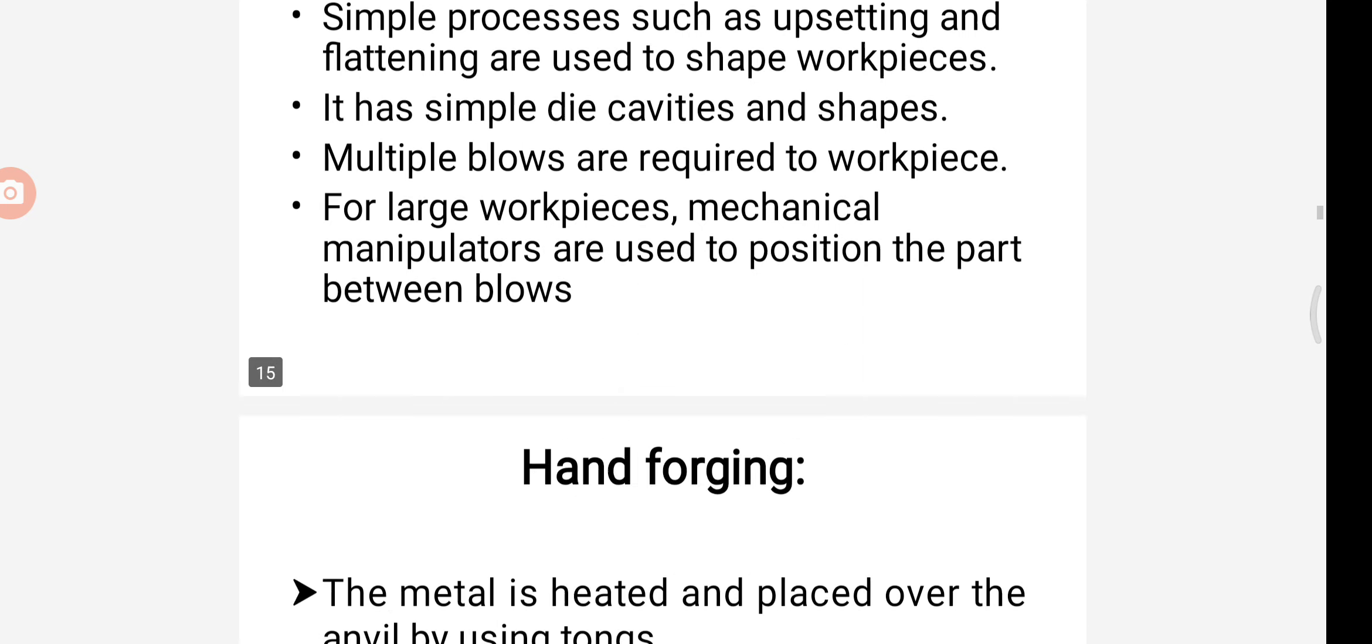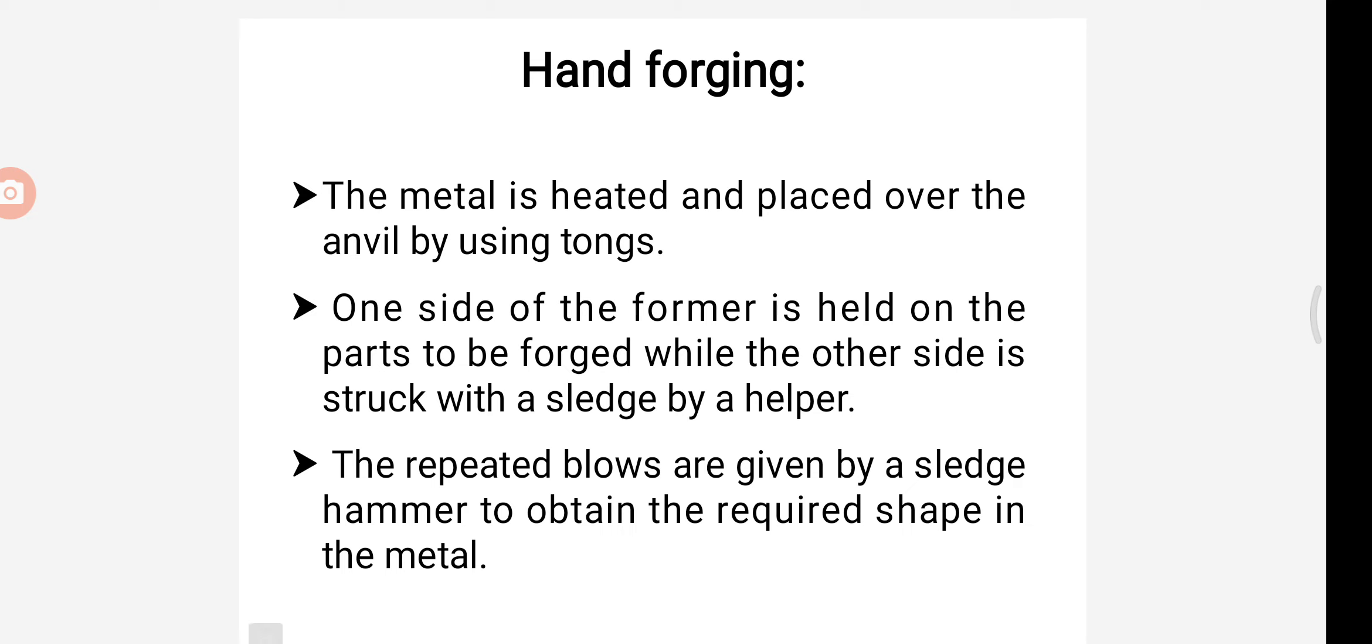Next, we are going to see about there are many types, that is the hand forging and power forging. What is the hand forging? In this, the metal is heated and placed over an anvil by using tongs. One side of the former is held on the part to be forged while the other side is struck with the sledge by the helper. The repeated blows are given by the sledge hammer to obtain the required shapes of the metals. This is known as hand forging.